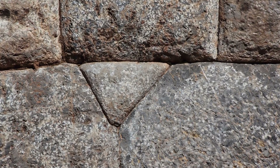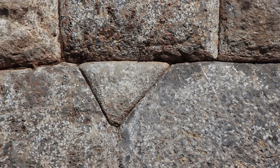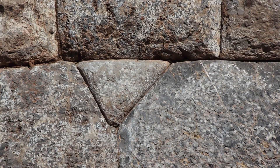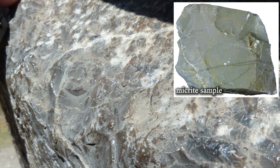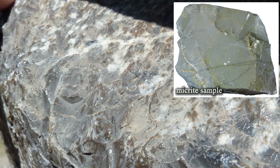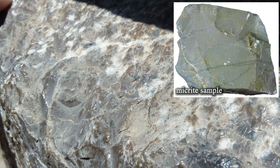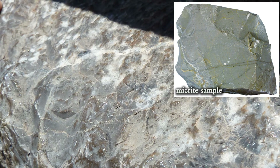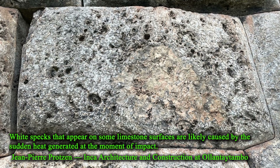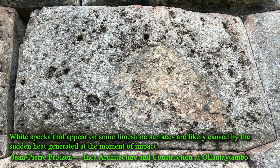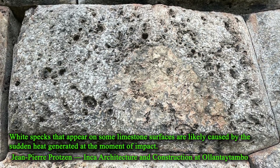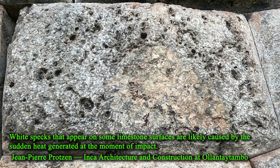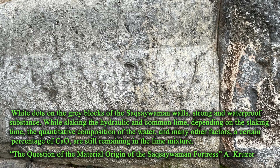These traces appear as white dots on the surface of the limestone — more precisely, on micrite, a variety of limestone composed of very fine calcite crystals. The simplest interpretation is that they were formed by impact. At the moment of contact, a network of microcracks develops together with a local temperature spike, leaving a light mark.